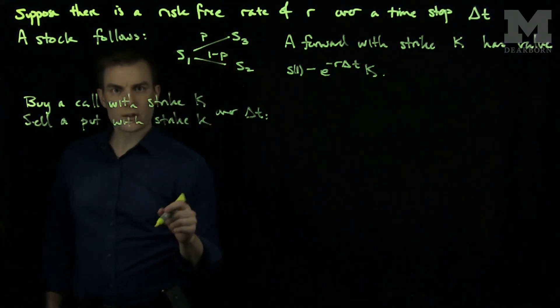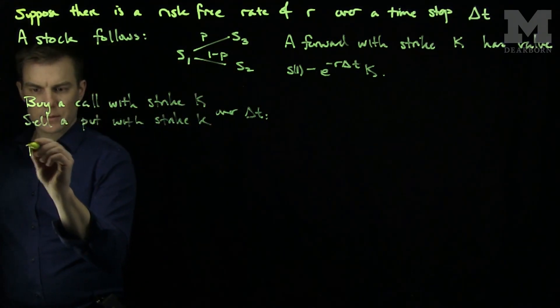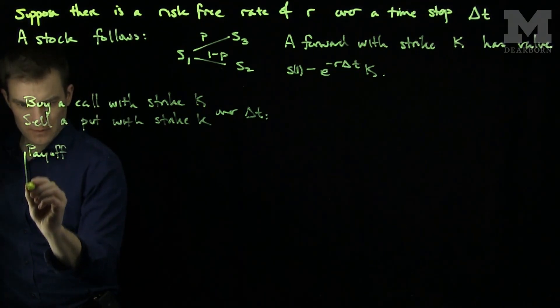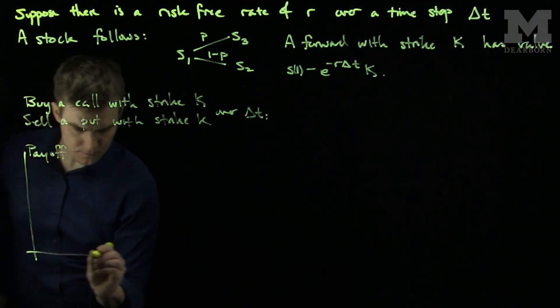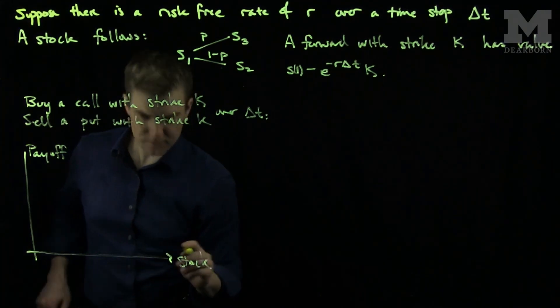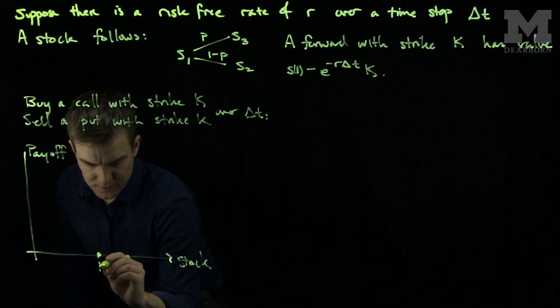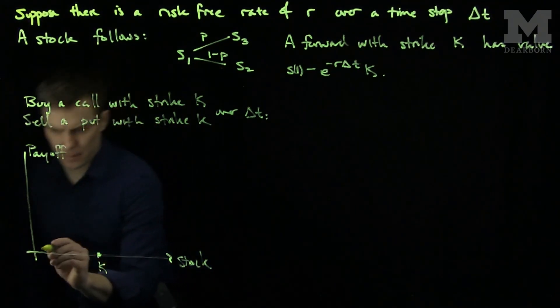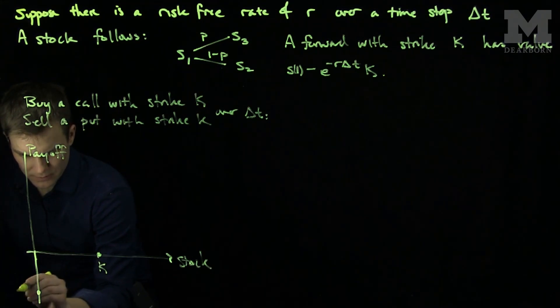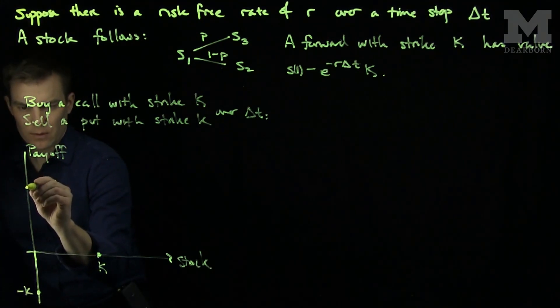We can construct a payoff diagram for these. This will be our payoff axis and this will be our stock axis. The exercise price is K. We can have this go down as well. This is the value negative K and this is the value positive K.